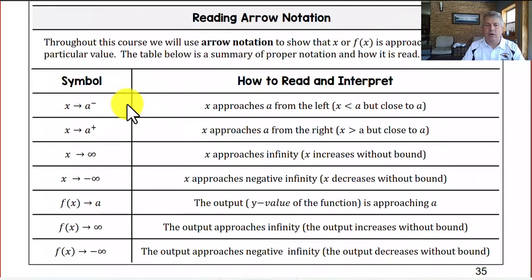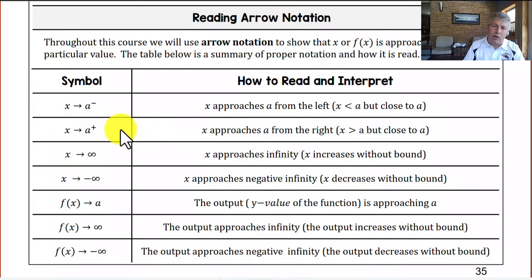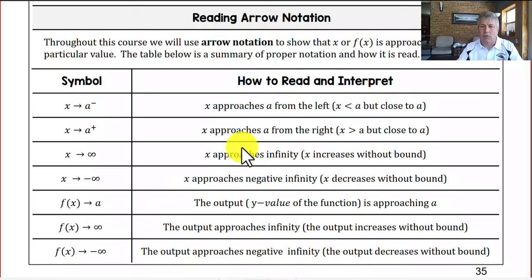There is notation we need to understand when evaluating rational functions. If we have x approaching some value a from the left, our x's are approaching that value from the negative side. X approaches a from the right means we're coming from the right-hand side. X can approach positive or negative infinity. F(x) approaching some value means our output is approaching that value, whether going up to positive infinity or down to negative infinity.